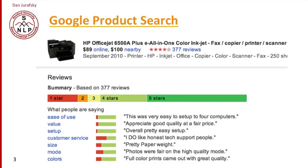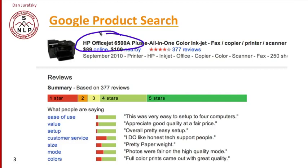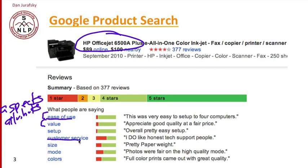This kind of sentiment can also be applied to products. For example, Google product search might want to, for a given product like a particular printer, automatically extract facts about the printer and sentiment for these facts. These are called aspects or attributes. We'd like to automatically decide aspects or attributes of the printer, like its ease of use or customer service, and then automatically determine the sentiments.